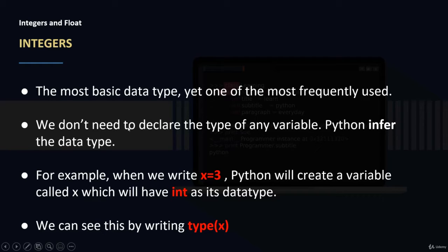We don't need to declare the type of any variable. You might have knowledge from other programming languages like Java, C and C++, where you would need first to say int X and then assign a value for X. In Python, we don't need to do so.